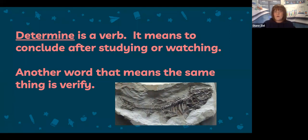For example, when looking at a fossil — we'll go back to some of our fossil studying — a scientist can determine many things about that animal. It can determine the type of animal it was, the environment that it lived in. So studying and watching and looking closely and investigating this fossil helps a scientist to make determinations.